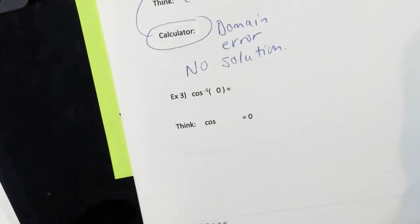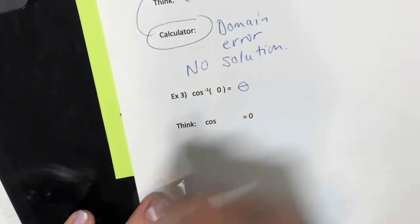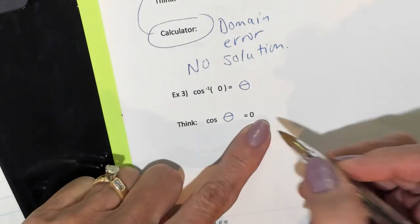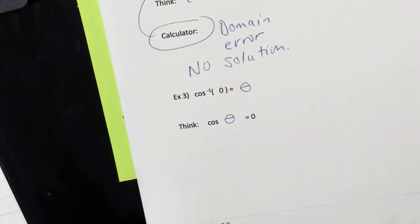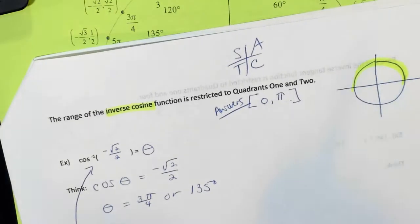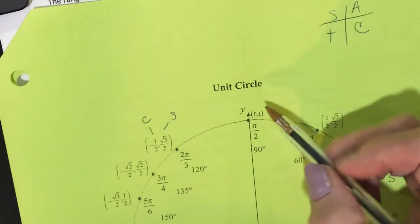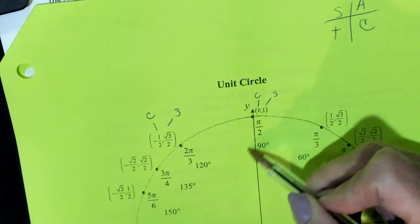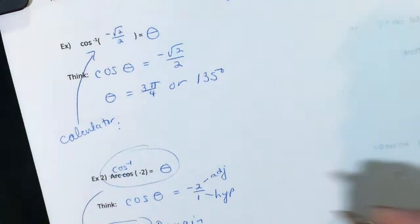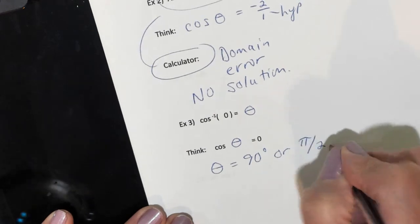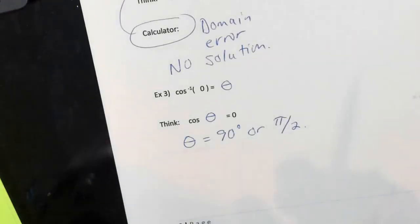Last cosine problem: inverse cosine of 0 equals theta. We're thinking the cosine of what angle gives us 0. Remember we have to be in quadrants 1 or 2. Get out your unit circle and find where cosine equals 0 — right there. So if we're in degrees, it's 90 degrees; in radians, pi over 2.